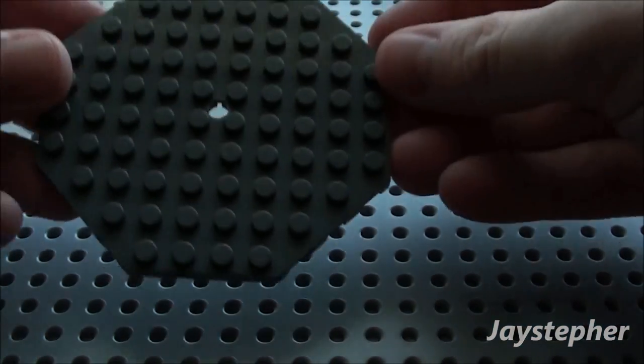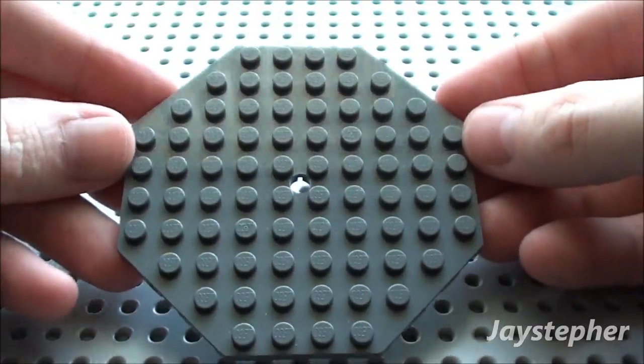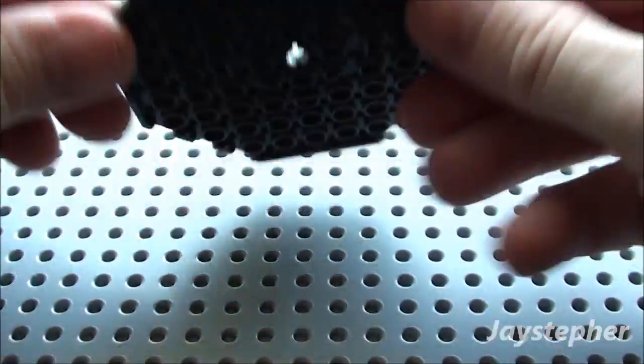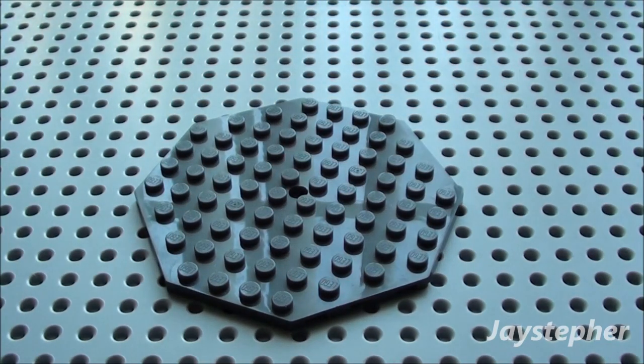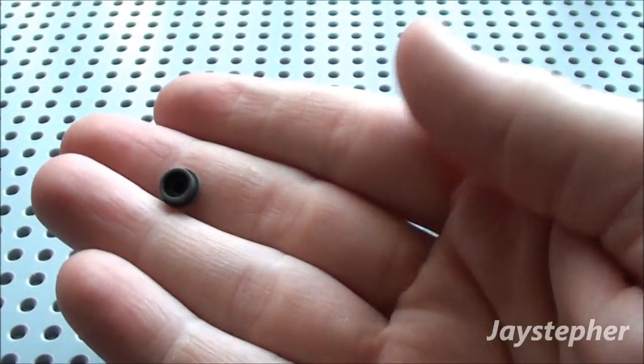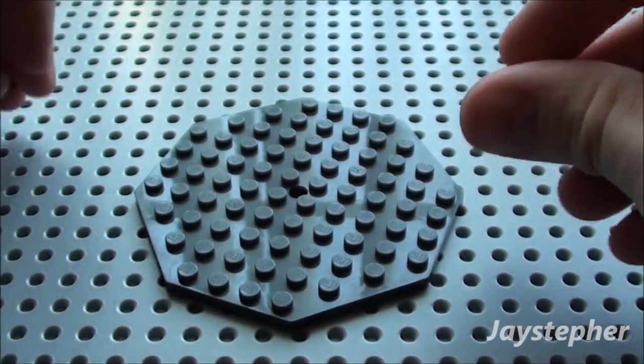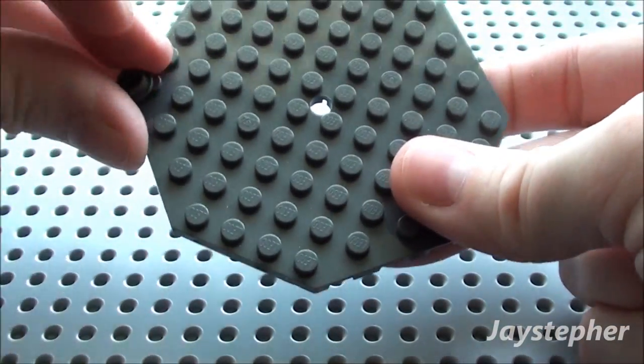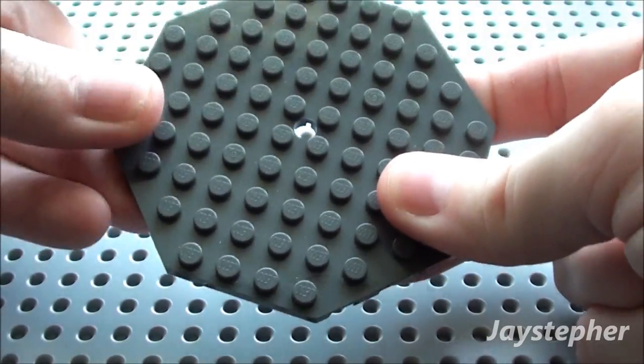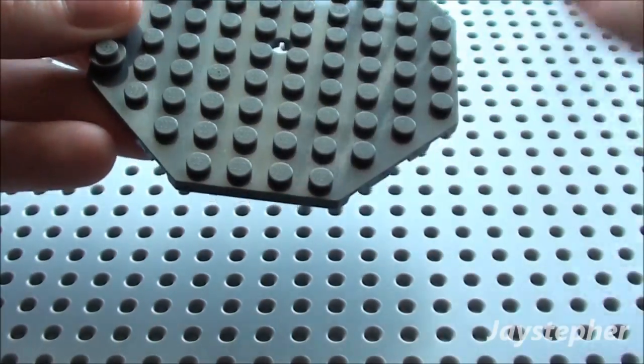The first thing we're going to need is a 10 by 10 octagon plate. And we're going to need eight of these 1 by 1 studs. Simply place one here and we're just going to skip every other corner.